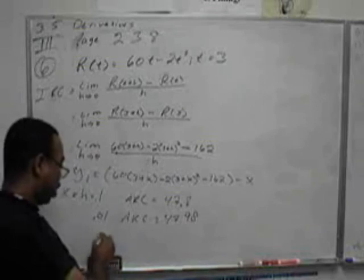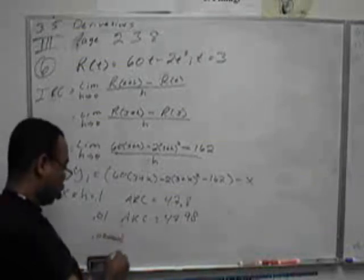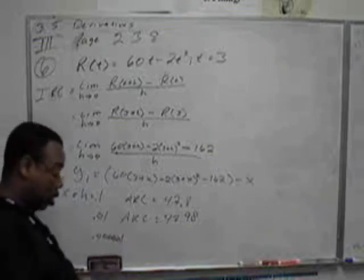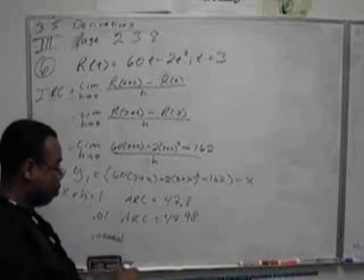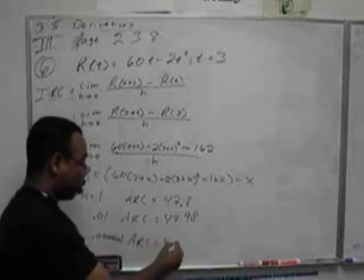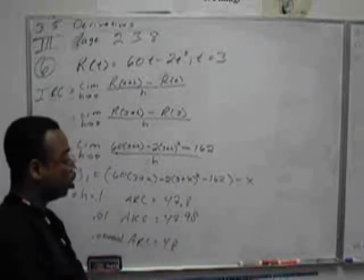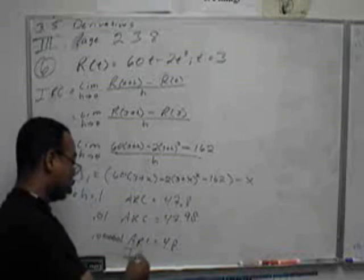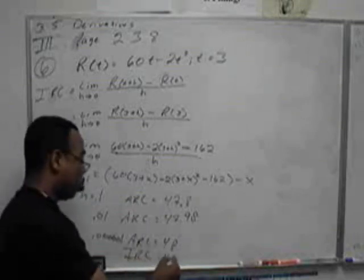If I keep putting smaller values of h in here, eventually my average rate of change gets closer and closer to 48. So we will conclude that the instantaneous rate of change will be 48.